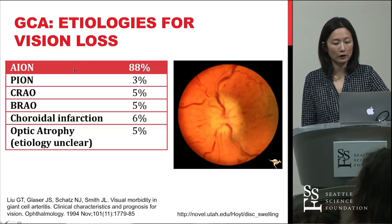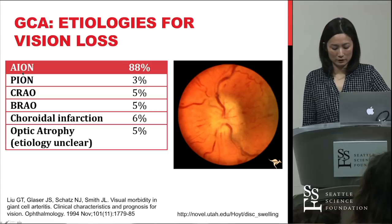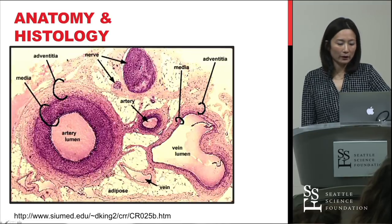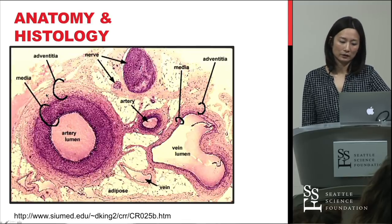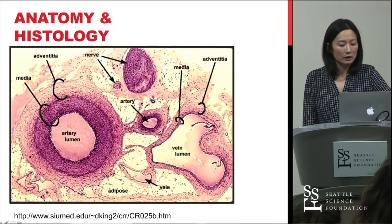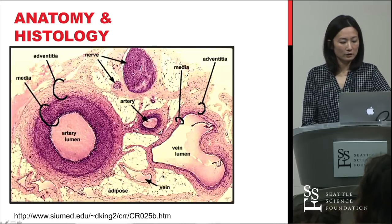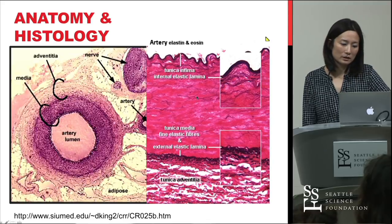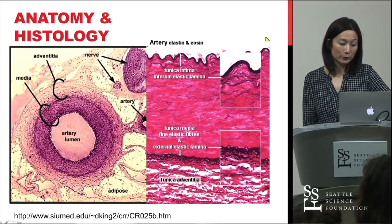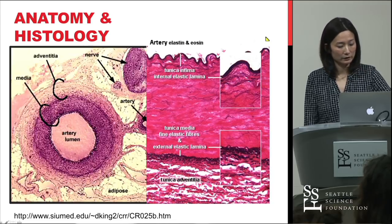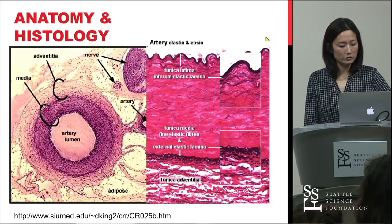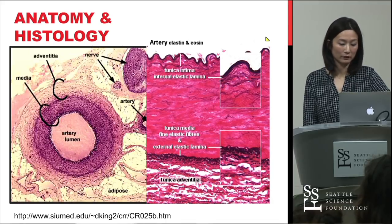Intracranial arteries are less involved because they have less elastin. An elastin and eosin stain shows dark elastin fibers densely filling the tunica adventitia and tunica media, with an elastic lamina as well. There is a reduction in the amount of elastic fibers as you pierce the dura. There is a correlation between the severity and extent of the arteritic process and the amount of elastic tissue present.